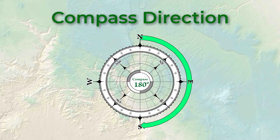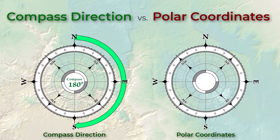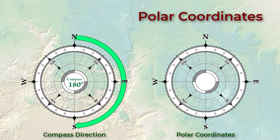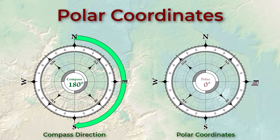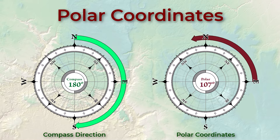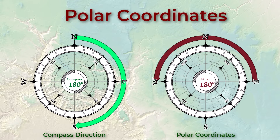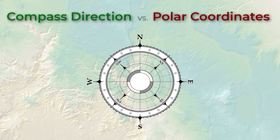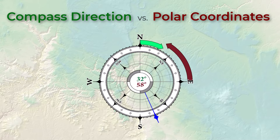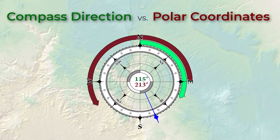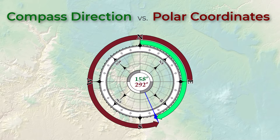Mathematicians more commonly calculate direction in the form of polar coordinates, where east is at zero degrees and values increase going counterclockwise. In this system, north is at 90 degrees and west is at 180 degrees, and direction is generally reported in radians. The folks who wrote this DINF tool apparently used the mathematical strategy, so the DINF values are reported in degrees counterclockwise from east. In this example, an aspect of 158 degrees compass bearing is equivalent to a DINF value of 292 degrees — they both mean the same direction.